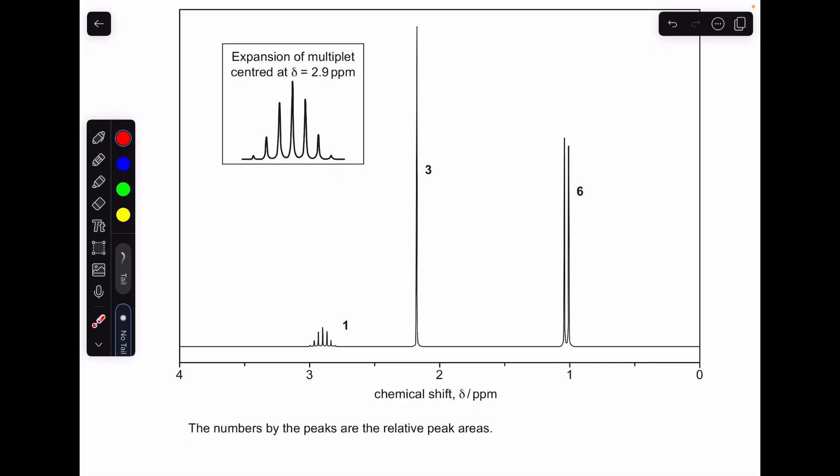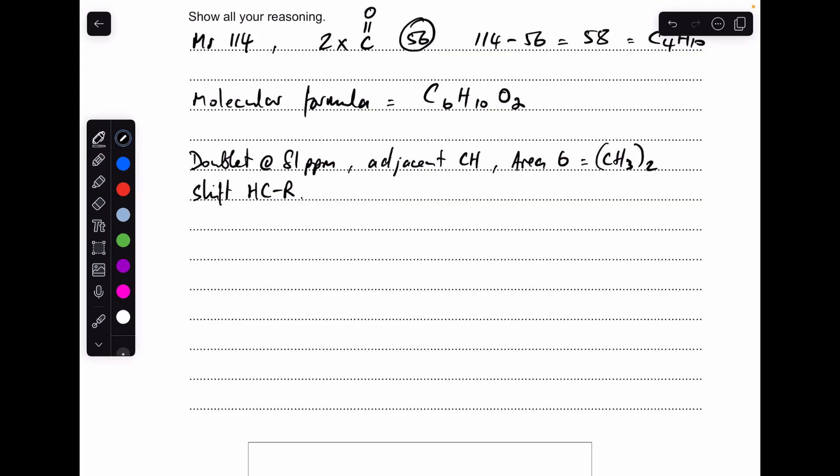The area is six, so there must be two CH3 groups, two equivalent CH3 groups causing this signal. And a shift of one is indicative of an H-C-R group. So there's that information written up. What I'm going to do now is just draw out this part of the molecule from the information. We've got two equivalent CH3 groups with an adjacent hydrogen, so the molecule must have this feature in it.